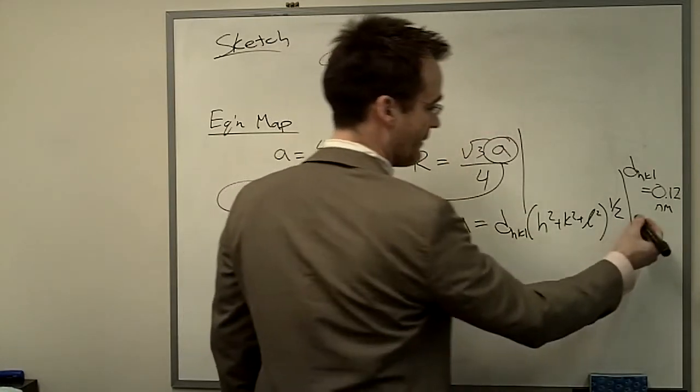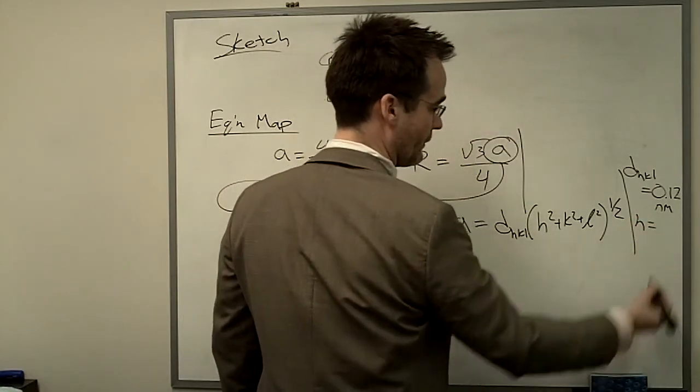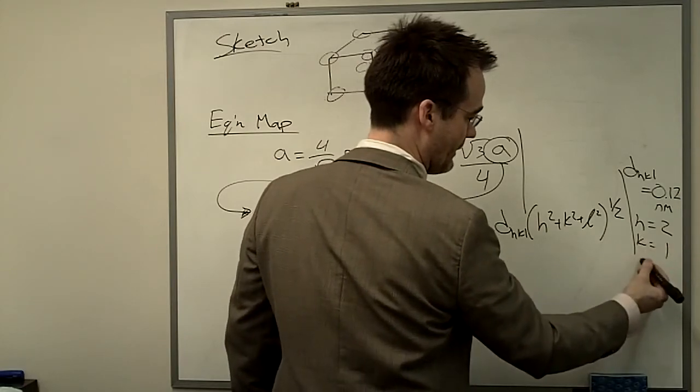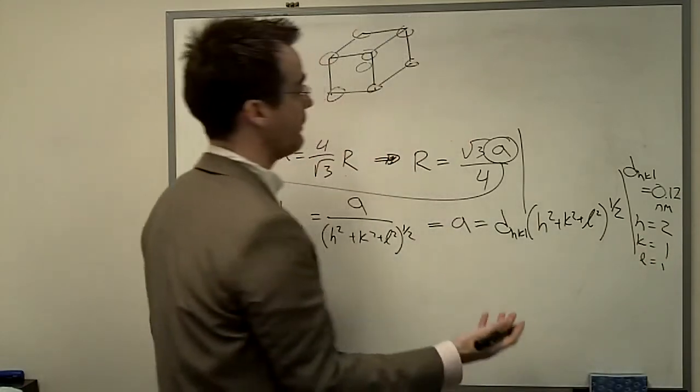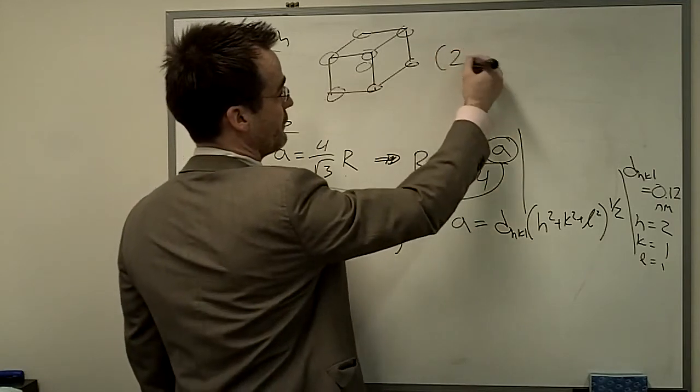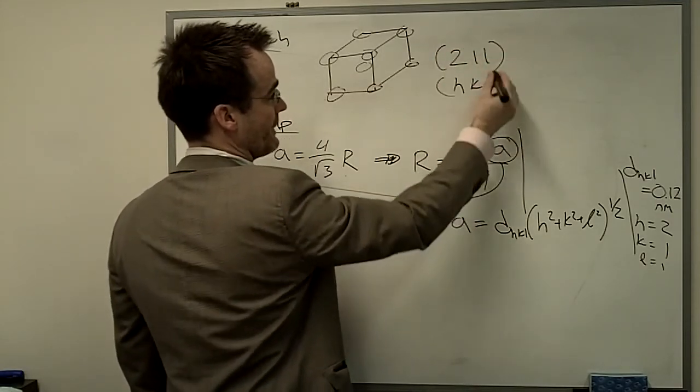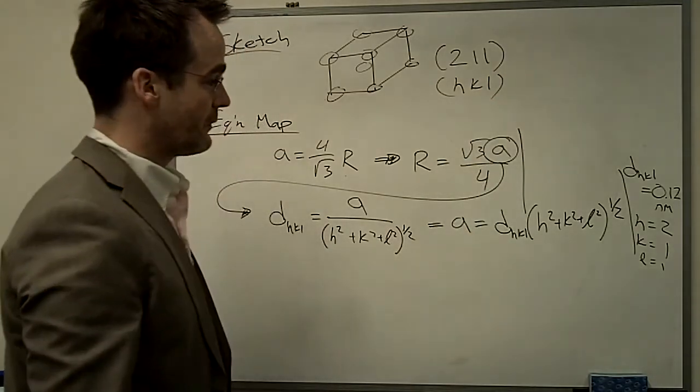There we go. And we have H equals 2, K equals 1, L equals 1. Why? Because we said earlier it was the 2-1-1 set of planes. So that's HKL. So we have that.